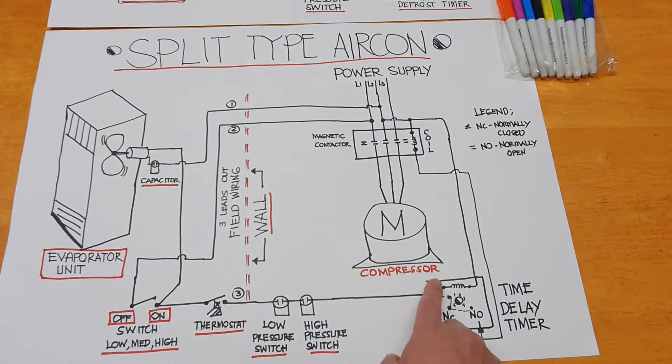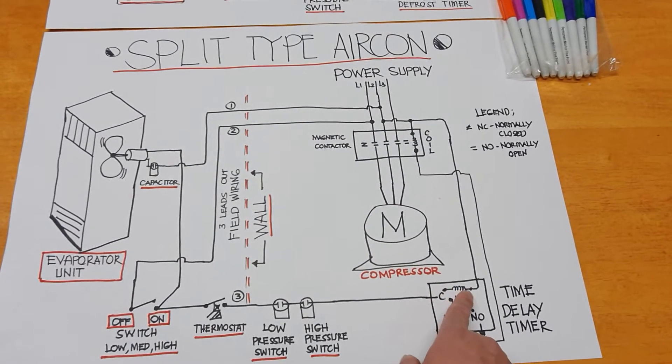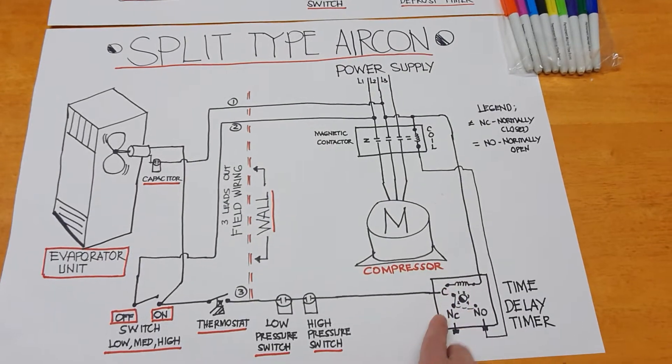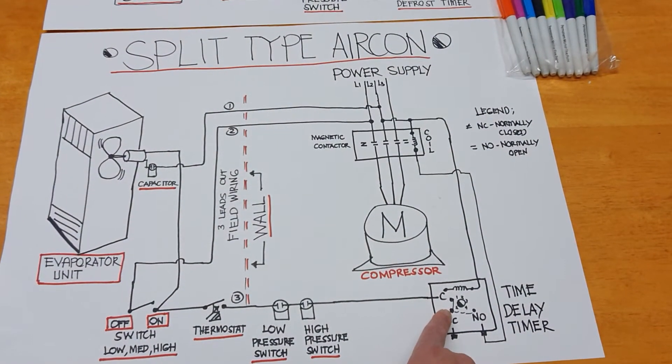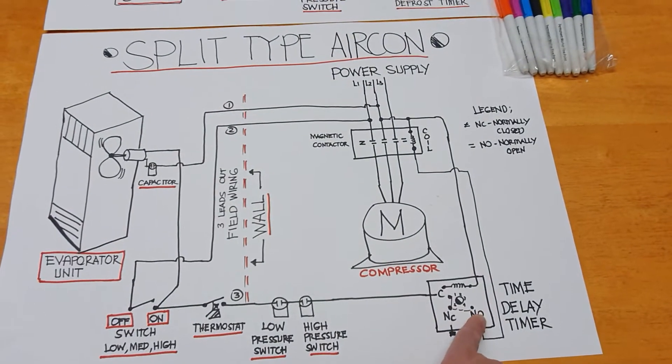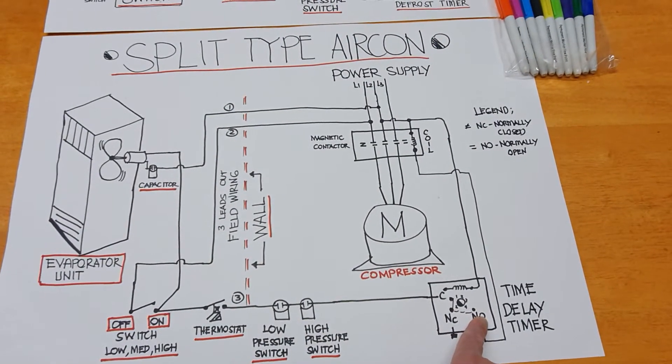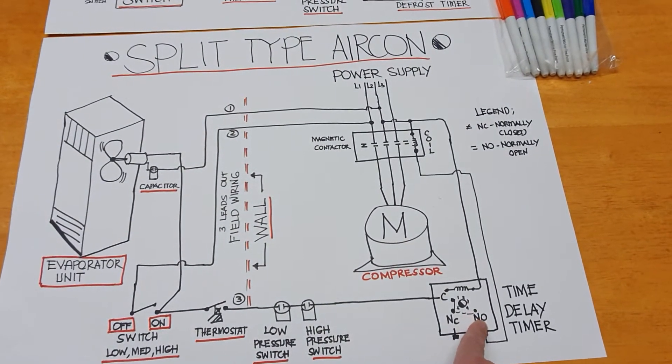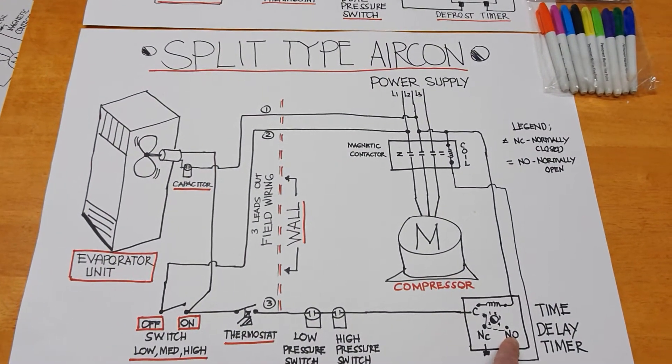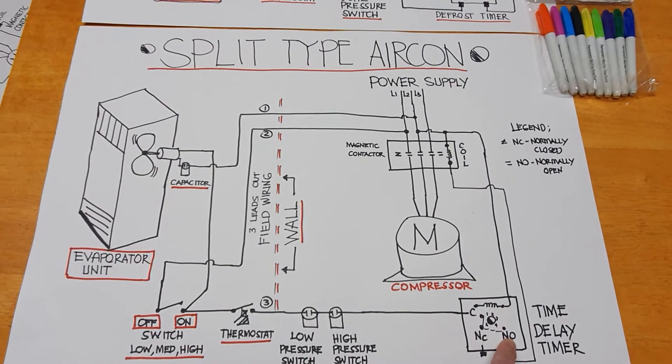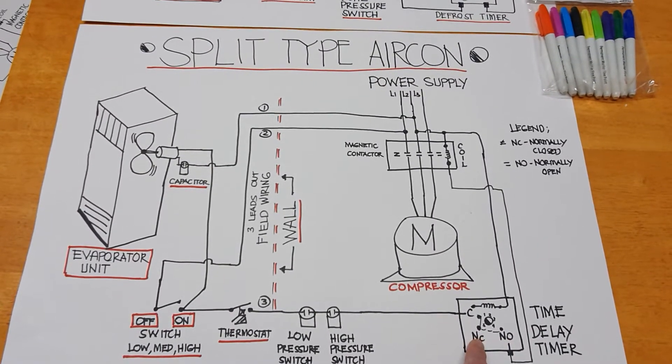This is line one, this is line two. The normal contact will change from here, go to normally open. Now this one will become normally closed in the actual current flow, and this one will become normally open.